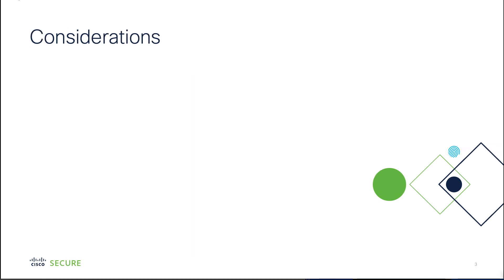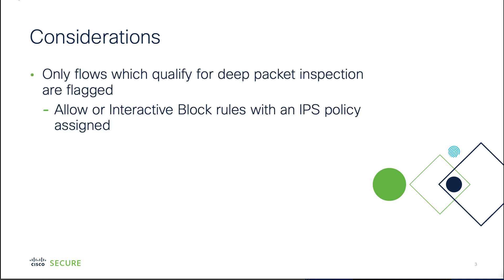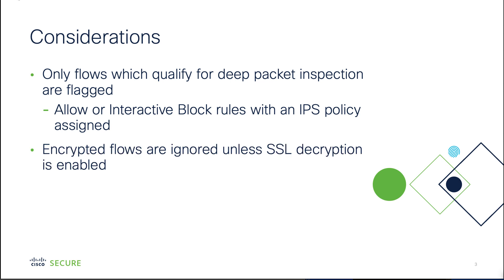There are some important things to remember when it comes to elephant flow detection. Only flows which qualify for deep packet inspection are flagged — that means flows that get inspected by Snort. These are rules with allow or interactive block action in the access control policy. Encrypted flows are ignored unless there's SSL decryption, because once a flow is determined to be encrypted we stop inspecting it with Snort, so it's not considered an elephant flow at that point.